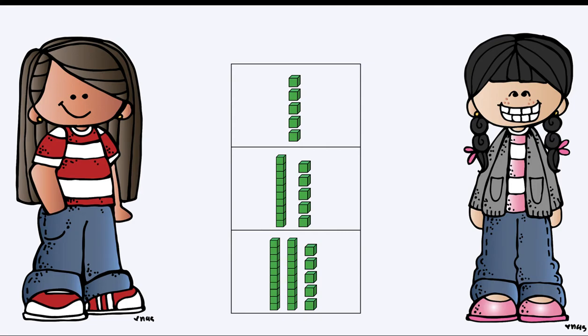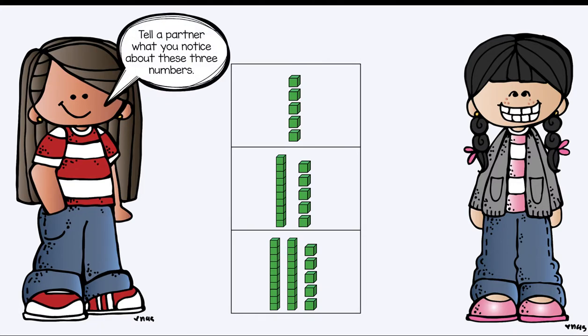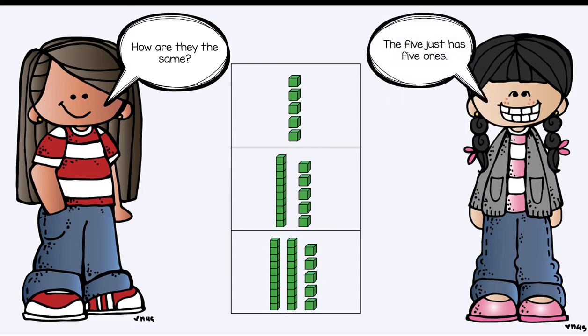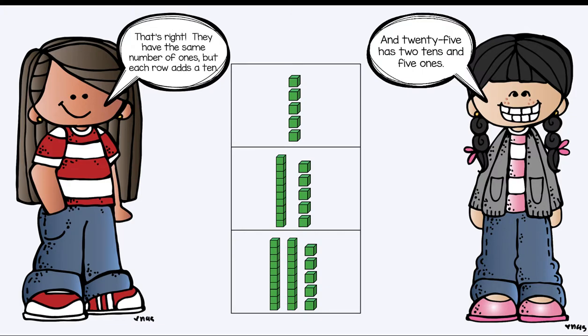See those 10s and those ones cubes. Tell a partner what you notice about these three numbers. How are they different? How are they the same? The 5 just has 5 ones. 15 has a 10 and 5 ones. That's right they have the same number of ones but each row adds a 10. And remember friends we're trying to find numbers that are 10 more and 10 less. How can we do that using our place value?